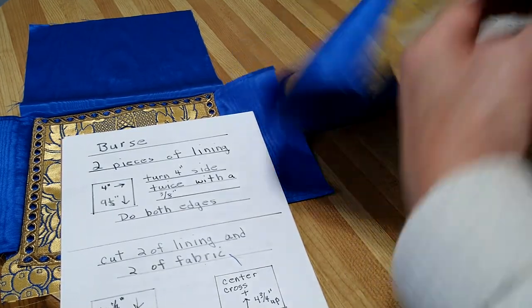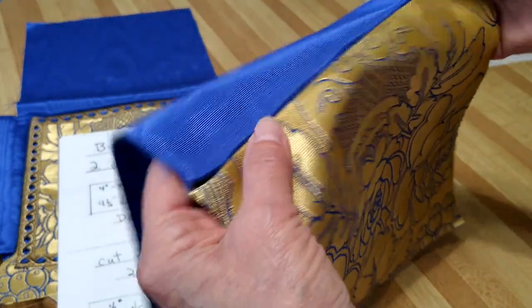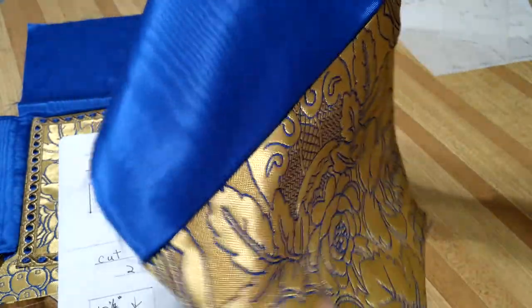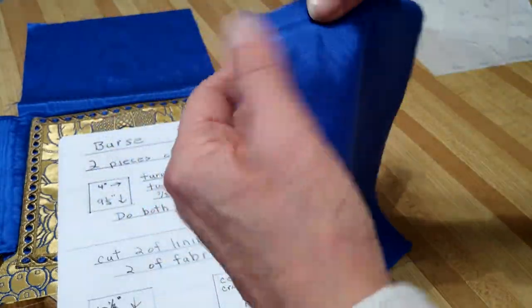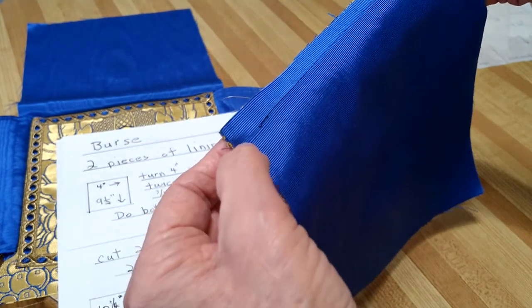You're going to find the piece where it tells you to sew it by machine on your pattern, and you're going to take the lining and the fabric and you're going to sew them together.